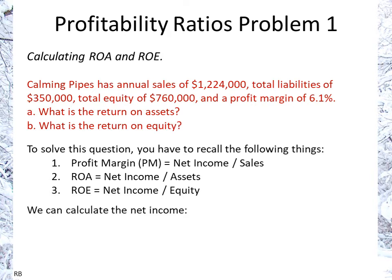Starting with the net income, which we need to calculate: we have net income over sales times sales, which is the profit margin times the sales. So we have 6.1% times $1.224 million, which gives us $74,664 as our net income.